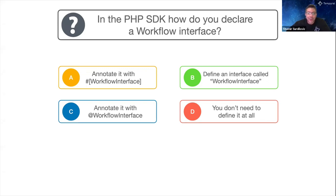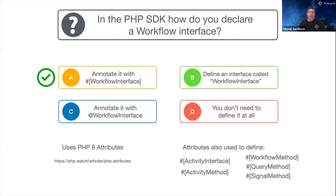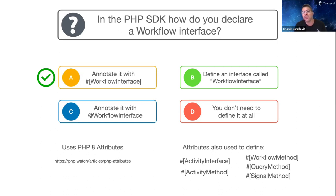In our PHP SDK we use PHP attributes, and the PHP attributes have the format of hashtag bracket and close bracket. The PHP SDK is very similar from the API perspective to our Java SDK. You can use PHP attributes to define an activity interface, activity method, workflow methods, and query and signal methods as well. Congratulations to whoever picked A.